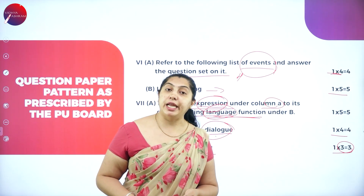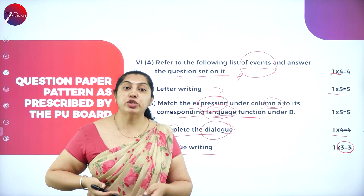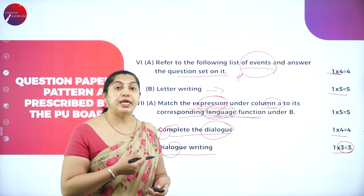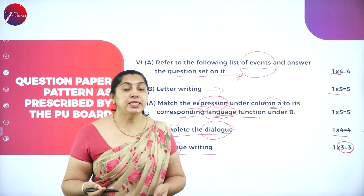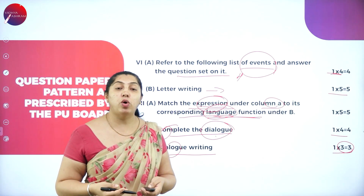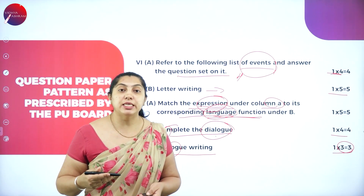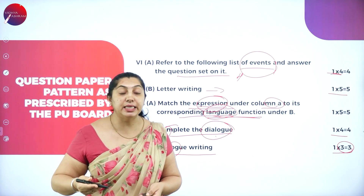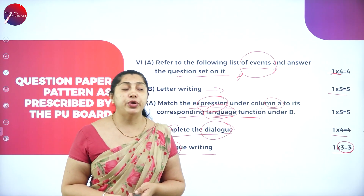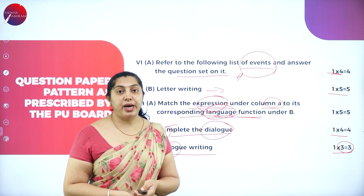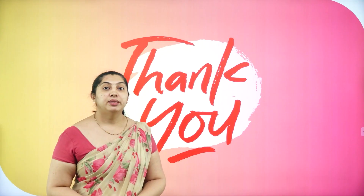In English, it's very easy to score marks. You have 50 marks from literature and 50 from grammar. If you're thorough in grammar, you can easily score 50 out of 50, because most answers are already given in brackets — you just need to read, understand, and fill in the blanks. This is all about the question paper pattern as prescribed by the PU Board. Thank you.